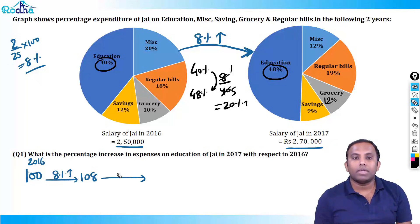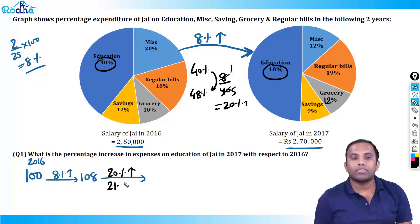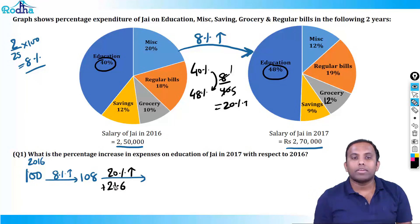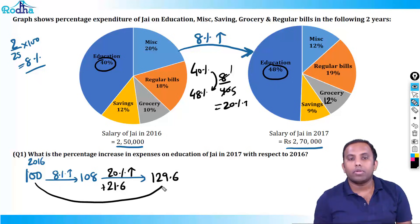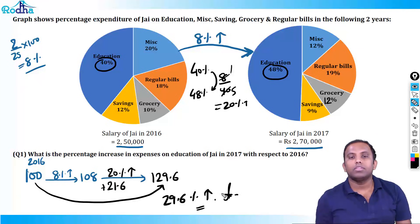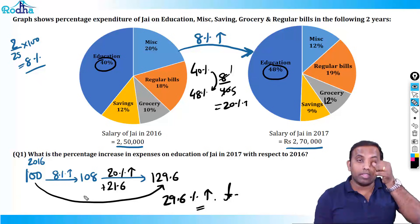That means a further 20% increase. What is 20% of 108? 10% is 10.8, so 20% is 21.6. So 108 + 21.6 = 129.6. So from 100 to 129.6 — that is a 29.6% change, meaning a 29.6% increase in the expense on education. This is the answer.